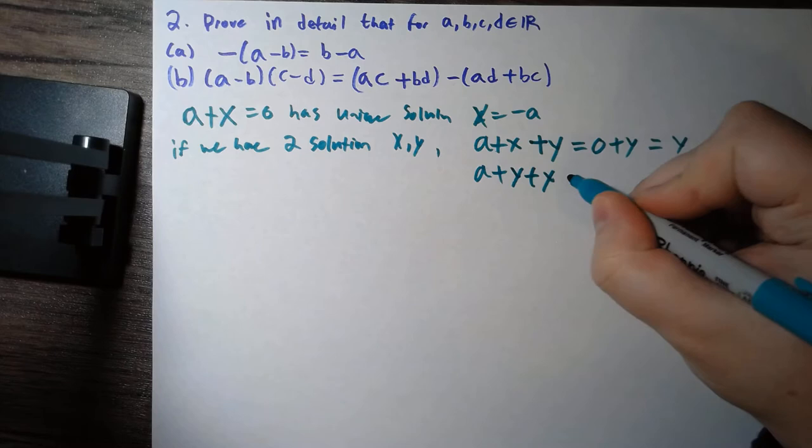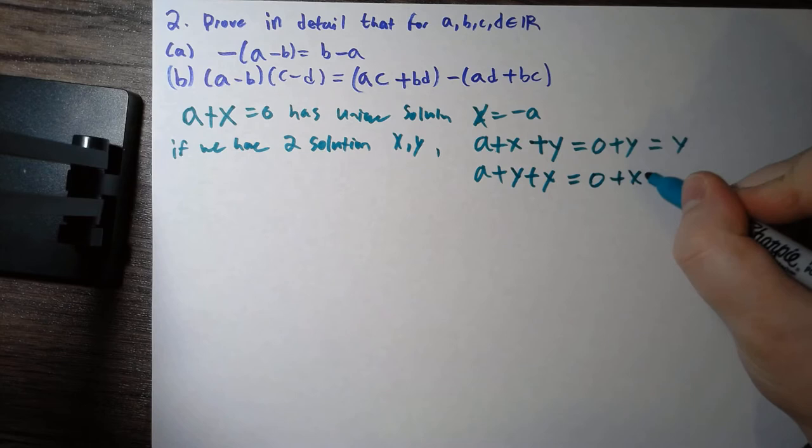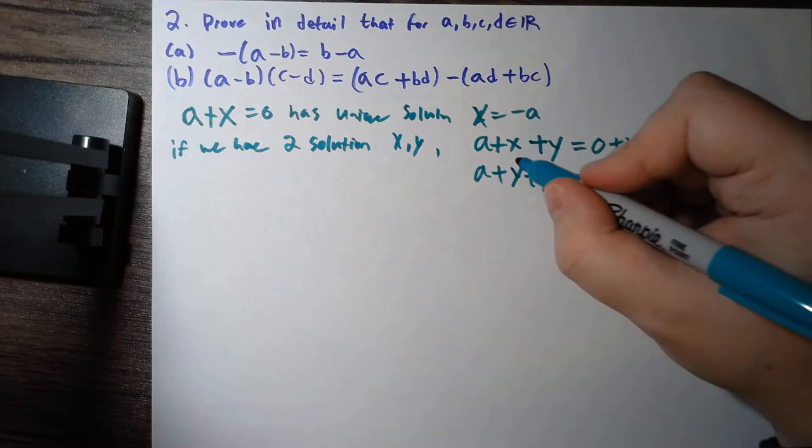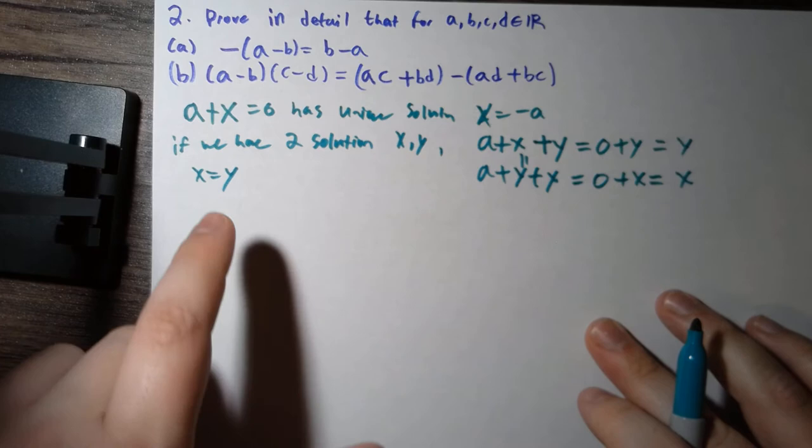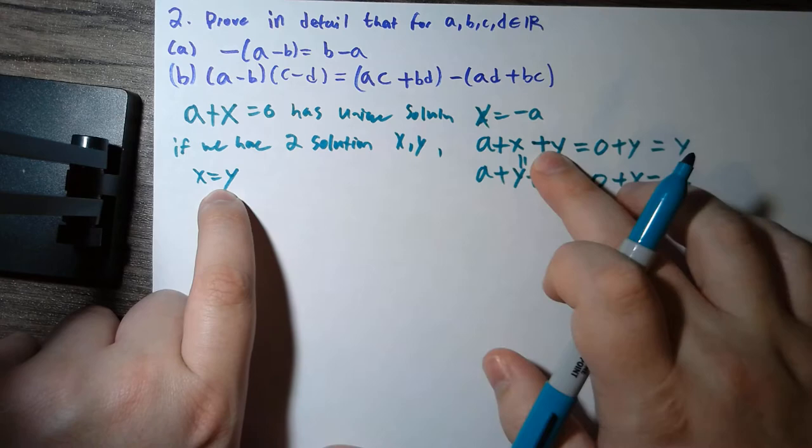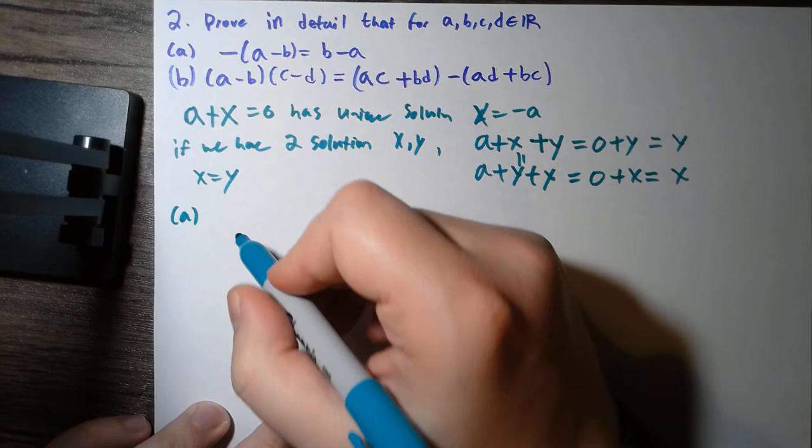But then we could also use the commutative property of addition and say that this is a plus y plus x. Then knowing that y is a solution, we have that a plus y is zero, so this is zero plus x. Using zero as the additive identity, this is x. We know these are equal, so x equals y. Thus there is a unique solution to a plus x equals zero, and that solution is negative a.